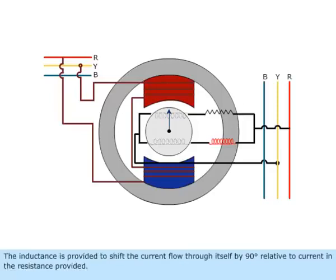The inductance is provided to shift the current flow through itself by 90 degrees relative to current in the resistance.